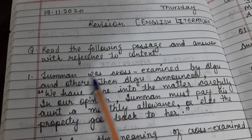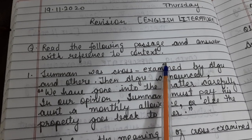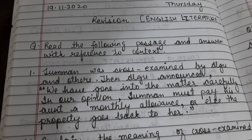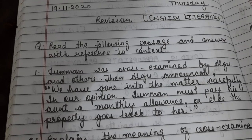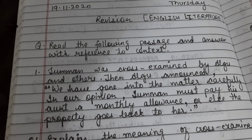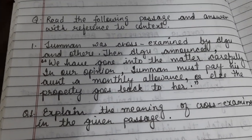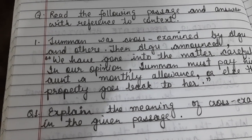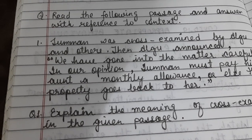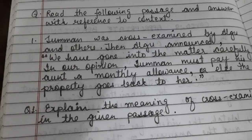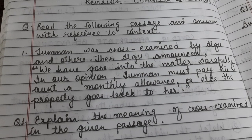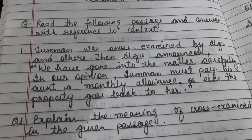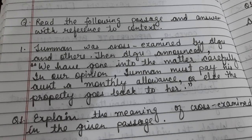Question number one: read the following passage and answer with Reference to Context. Reference to Context means a context — a paragraph or a few lines from your book — has been given to you, and you have to read those lines properly. Some questions are given to you related to that particular passage, and you need to give answers according to the passage only.